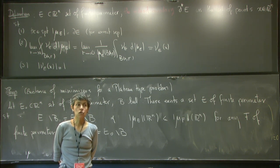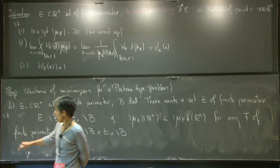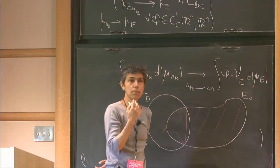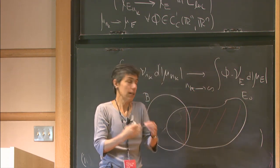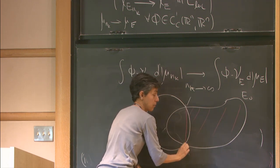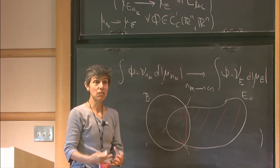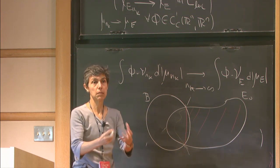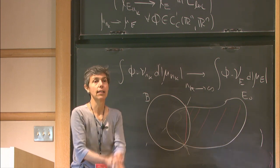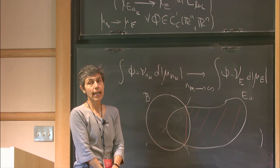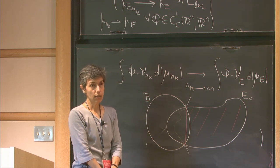Even if E_0 is a smooth set, the perimeter minimizer will generally not be smooth — it will have corners or cusps. If we insist on staying in the C1 class, we don't have a minimizer. That's exactly why we went to sets of locally finite perimeter, and why much of geometric measure theory was developed: you dip a wire frame in soap and you see a minimal surface, and you need the vocabulary to describe that object.